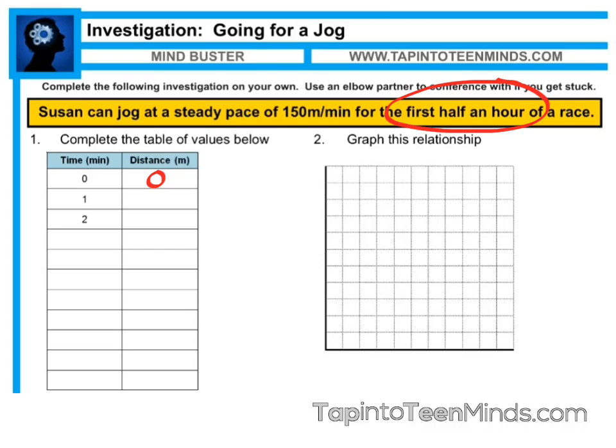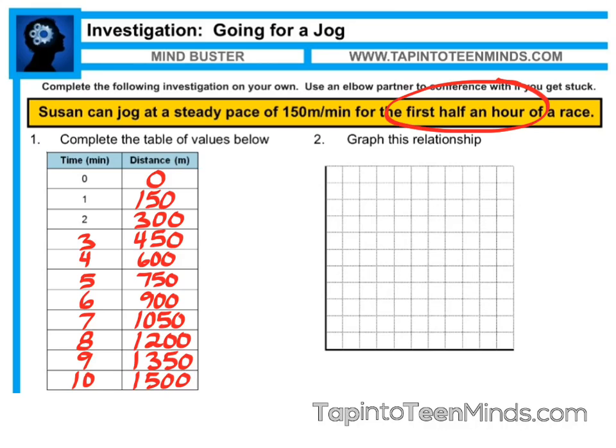We know that this runner is going at a steady pace of 150 meters per minute, so in this case we're going to essentially be going up by 150 meters every single minute. Now that our table is complete, we can see that after about 10 minutes of this race, this runner will have run 1,500 meters or 1.5 kilometers.